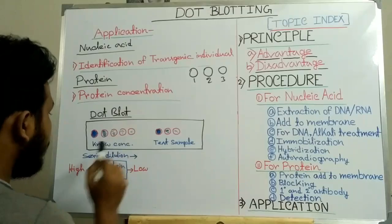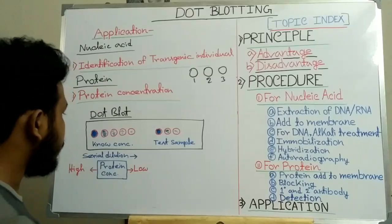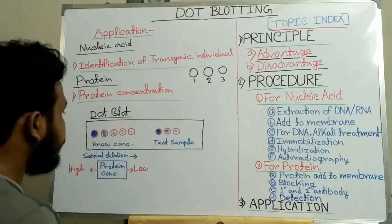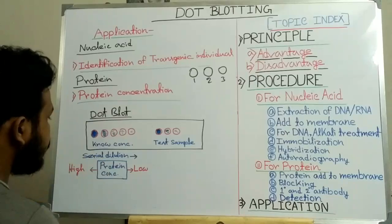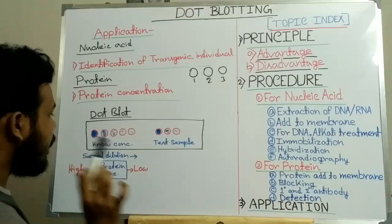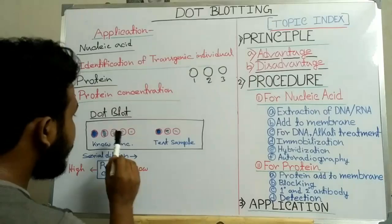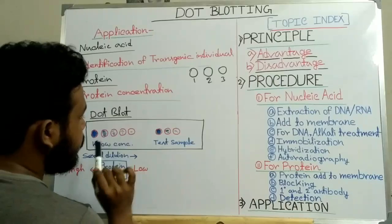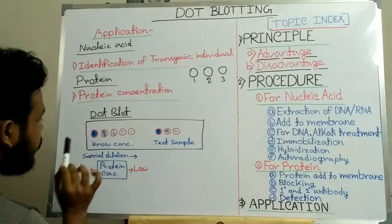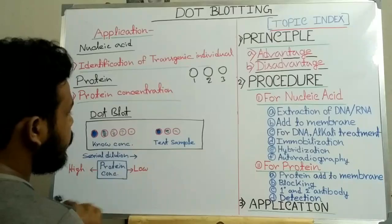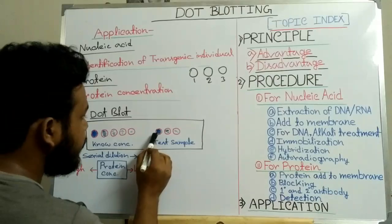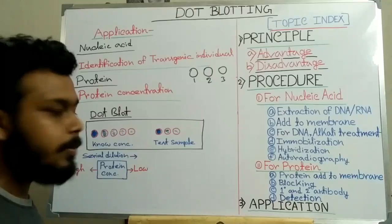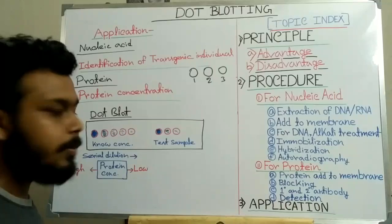Dot blot is also used to estimate protein concentration. You prepare dots containing known concentrations on the membrane, and the color intensity reflects the protein concentration. The highest color intensity indicates the highest concentration and the lowest indicates the lowest. By comparing the color intensity of an unknown sample with these known concentrations, you can determine the protein concentration of the unknown sample. In this way, protein concentration can be identified by dot blotting.